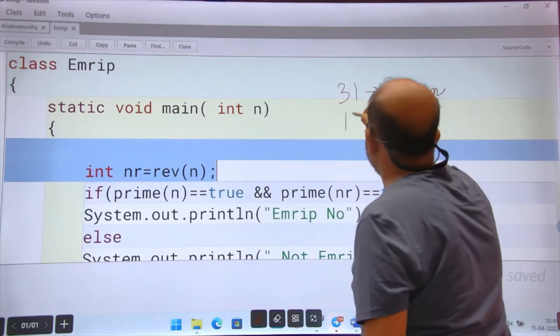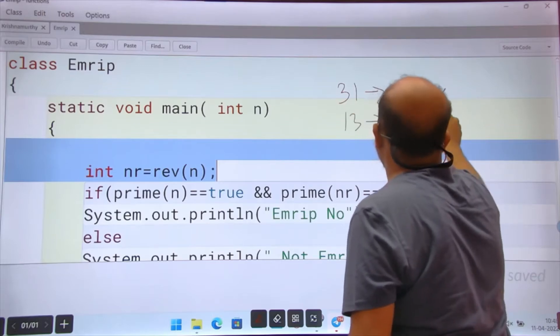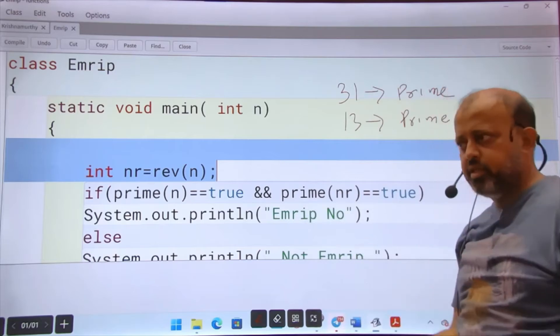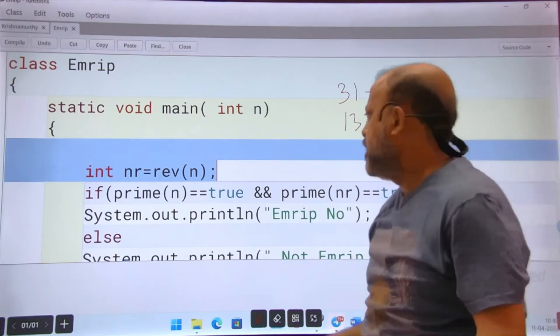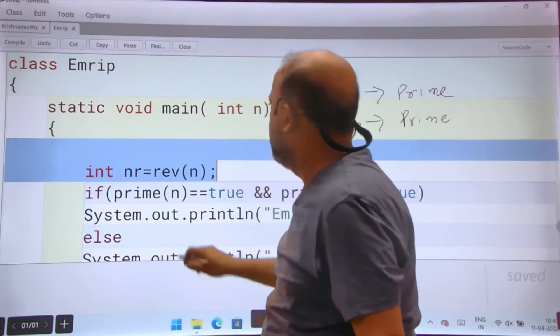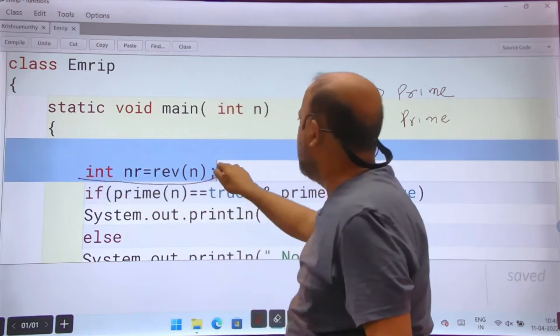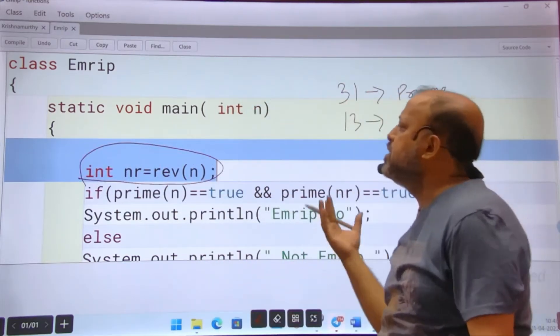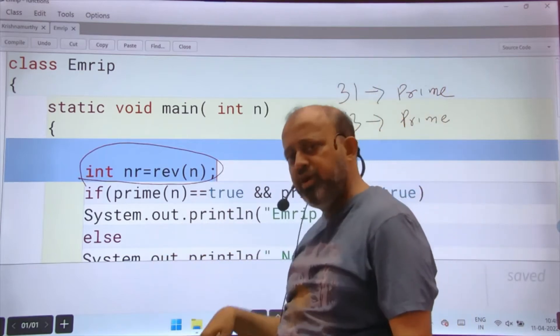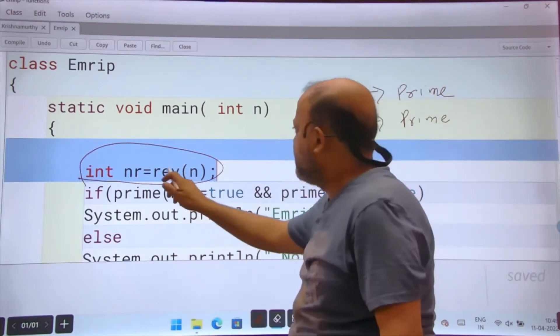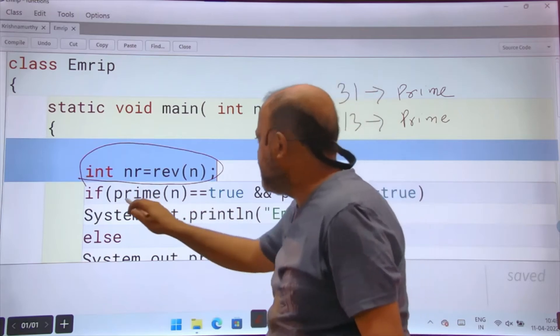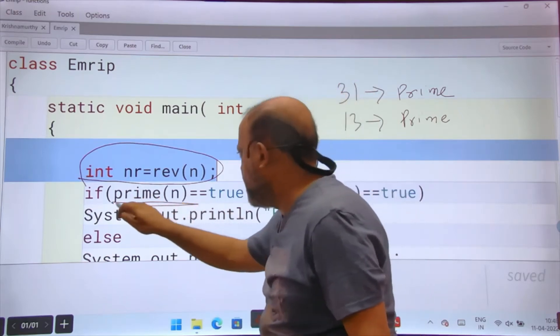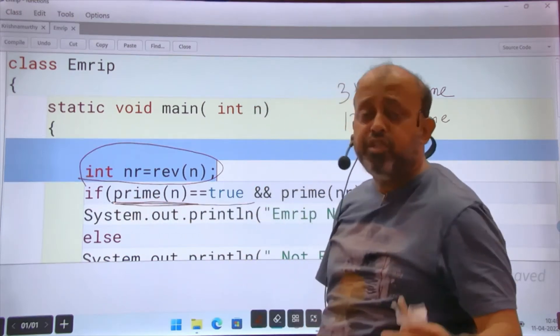Its reverse 13 - 13 is prime. So here I have used two functions. Try to understand both functions. First function you can see: int nr equals rev n. Rev, I have assumed, returns the reverse of any number. How I will define, you will see it later.